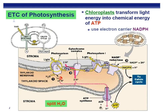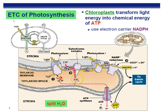Electrons gain energy — they're kicked up in energy level using light captured by the P680 chlorophyll in photosystem 2. The light energy is now transferred to the electron, making it an excited electron. That electron uses its energy to pump protons from the stroma into the thylakoid space. As electrons pass from carrier protein to carrier protein through the cytochrome complex, they lose energy, eventually reaching photosystem 1. These protons build up, form a concentration gradient, and diffuse through ATP synthase to phosphorylate ADP and make ATP.